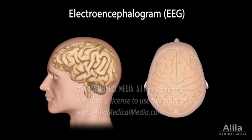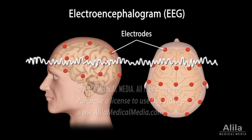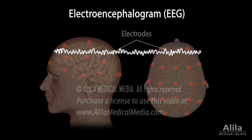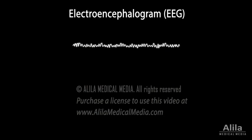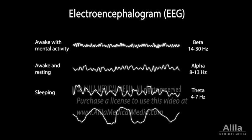Brain activity can be recorded in the form of electroencephalogram, EEG, which measures electrical activity in the superficial layers of the cerebral cortex. Different stages of consciousness correspond to different types of brain waves. A fully awake and alert brain produces high-frequency, low-voltage beta waves. As consciousness decreases, brain waves become progressively slower in frequency and higher in voltage.